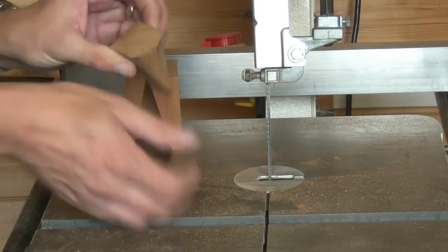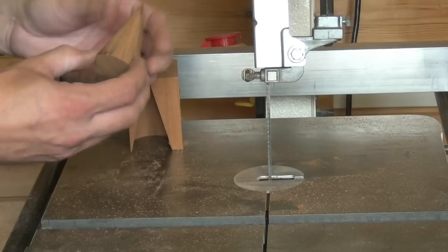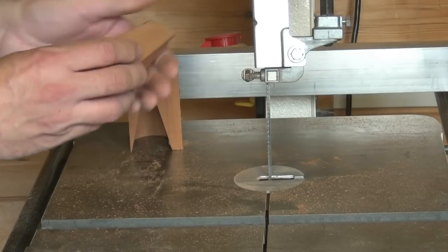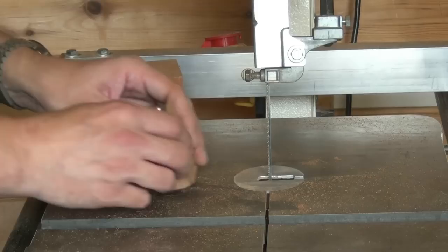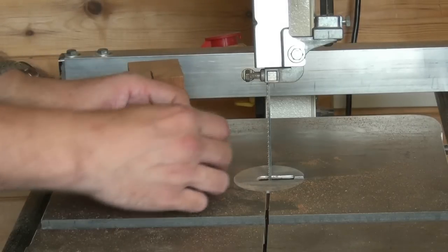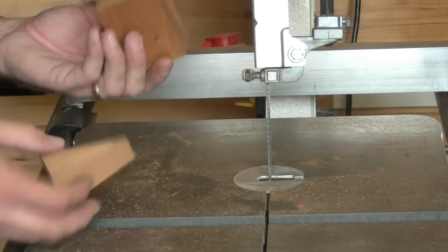This produces half a cone that almost requires no sanding. And you could continue that cut all the way around and pull a cone out if you wanted.